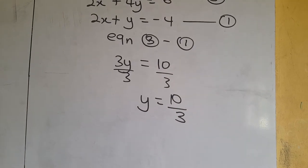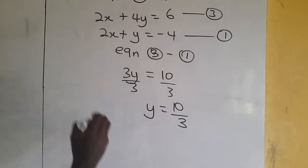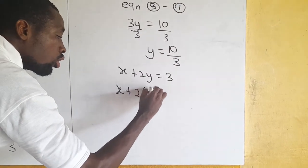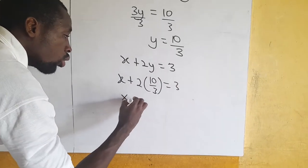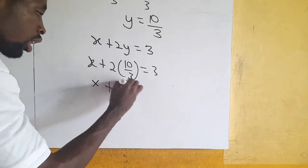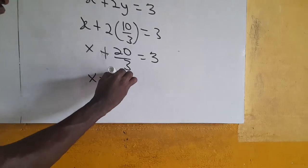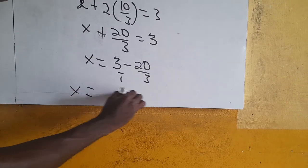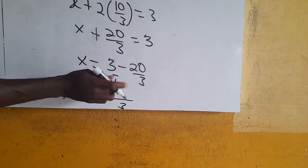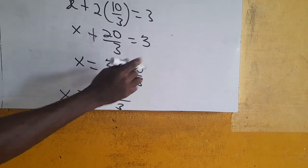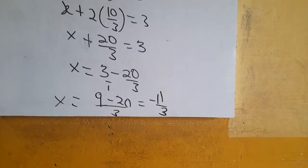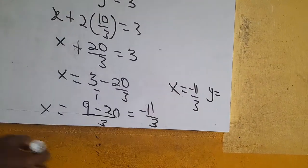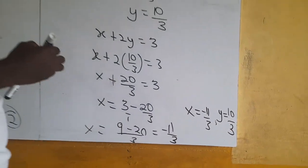We substitute the value of y into equation 2 to find x. So x plus 2y equals 3. With y equal to 10 over 3: x plus 2 times 10 over 3 equals 3, so x plus 20 over 3 equals 3. Therefore x equals 3 minus 20 over 3. Finding the LCM of 3: that's 9 over 3 minus 20 over 3, which gives x equal to negative 11 over 3. So x is equal to negative 11 over 3 and y is equal to 10 over 3.